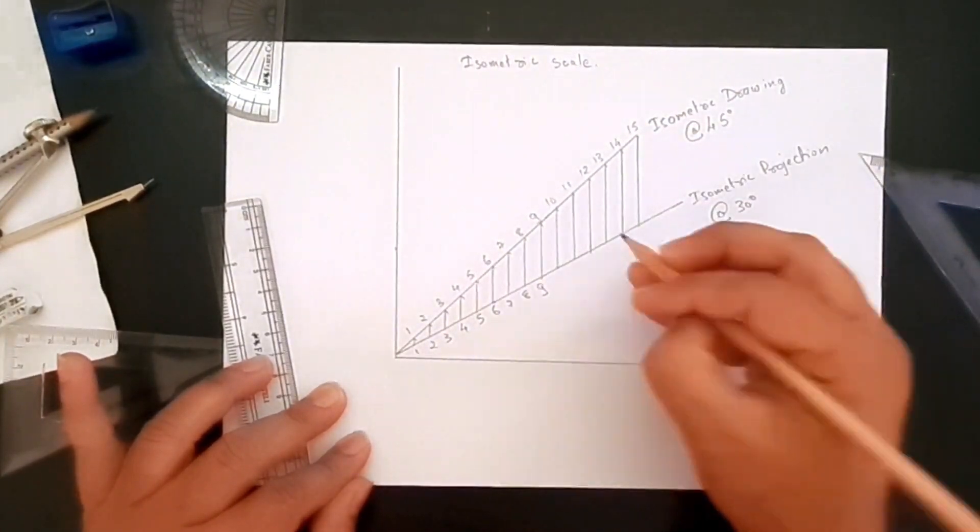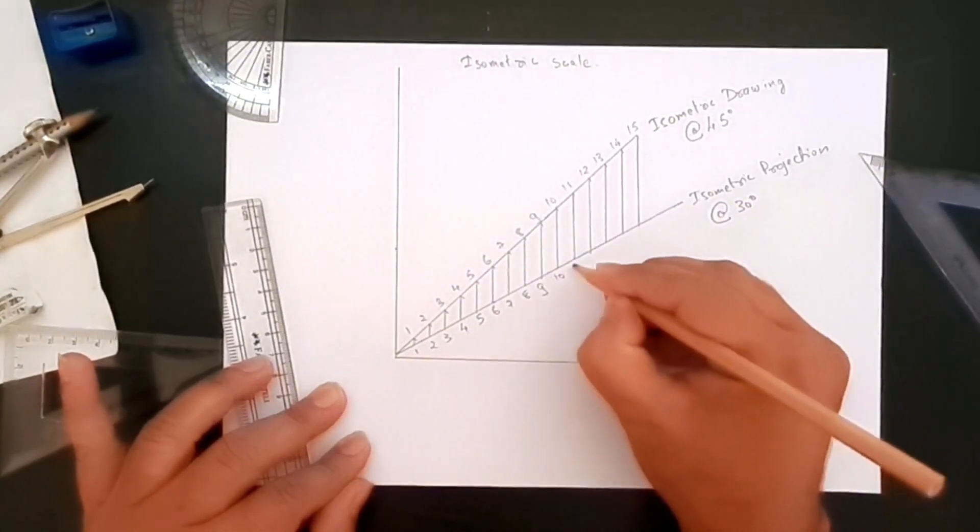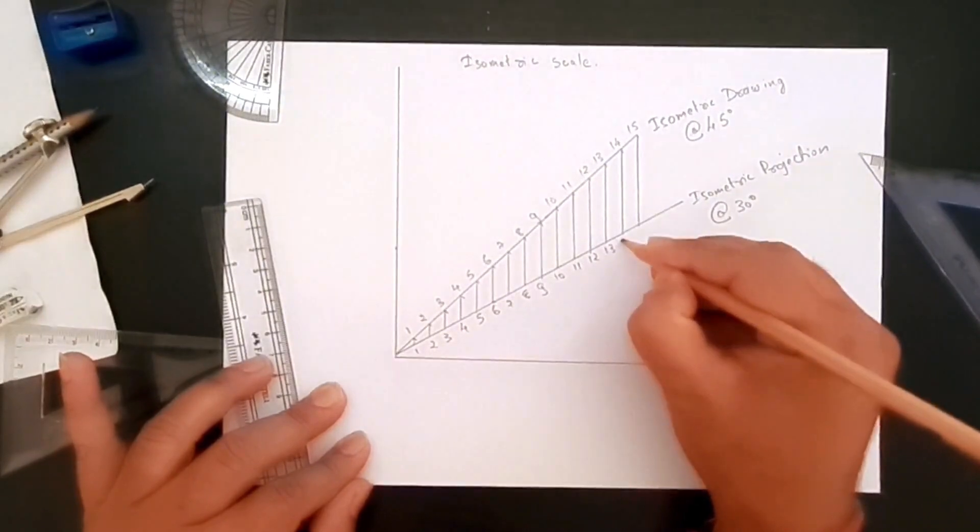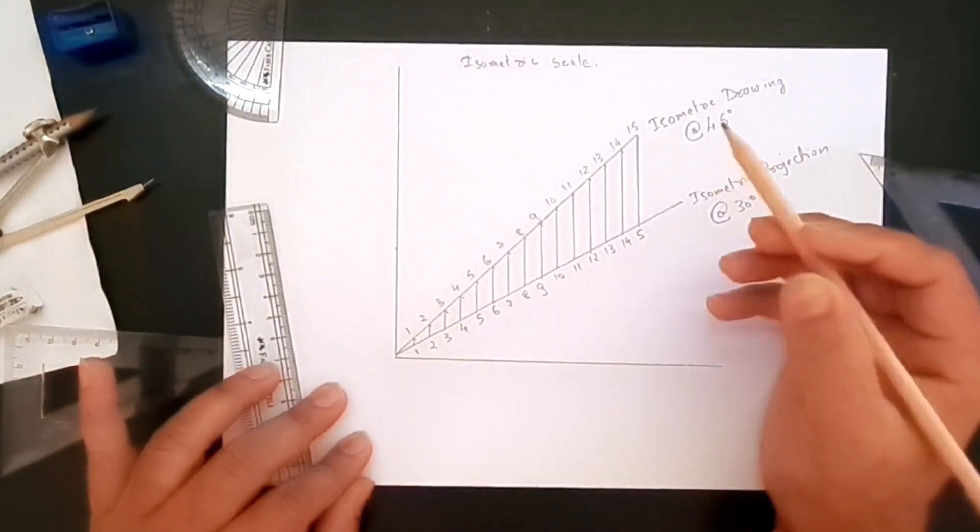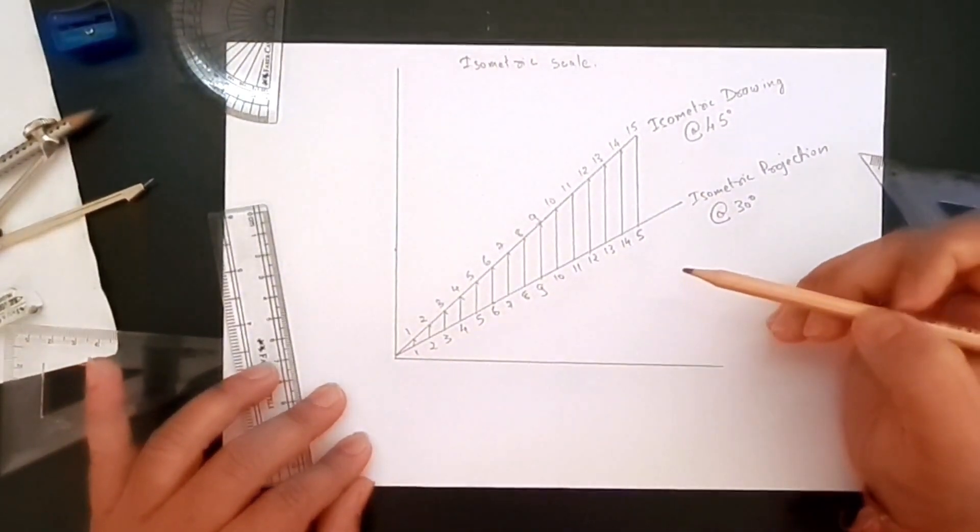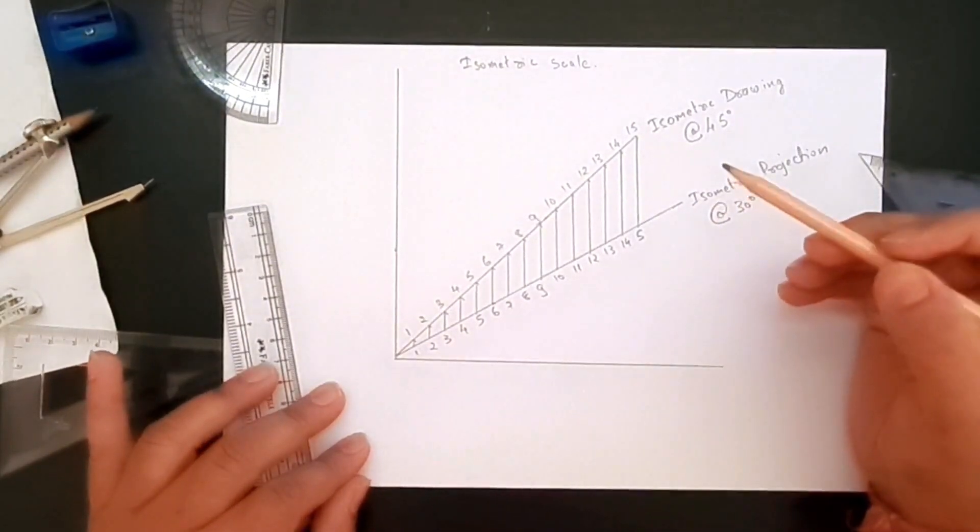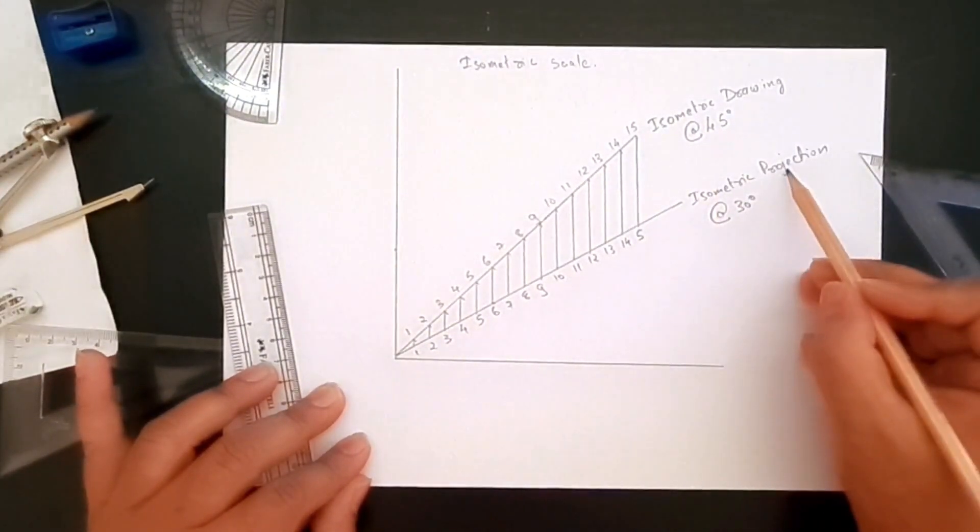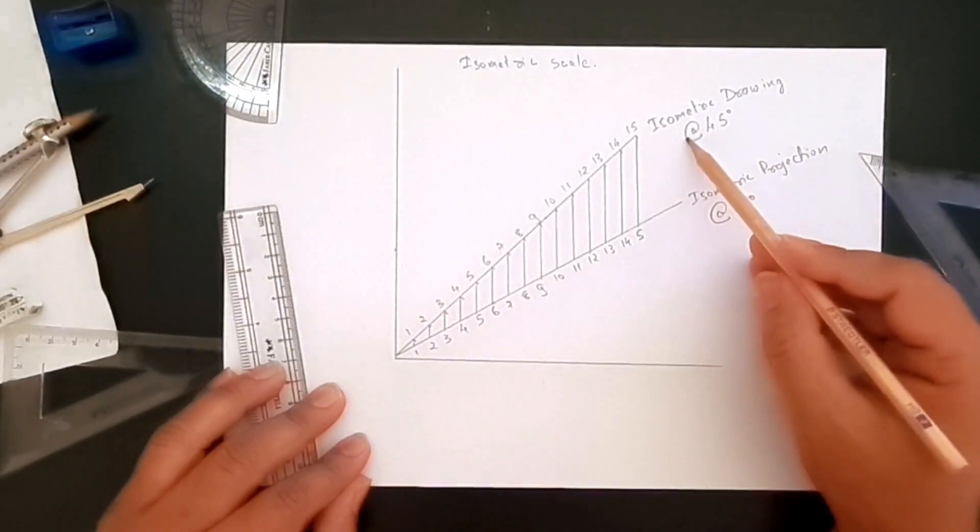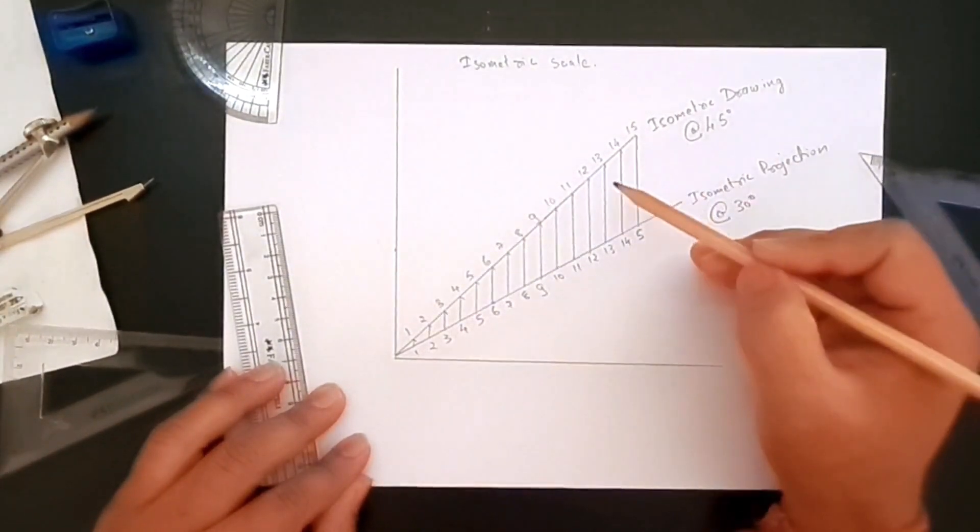This is our isometric scale. Now for any reason you need to create an isometric projection rather than an isometric drawing, then you would use a scale similar to this.